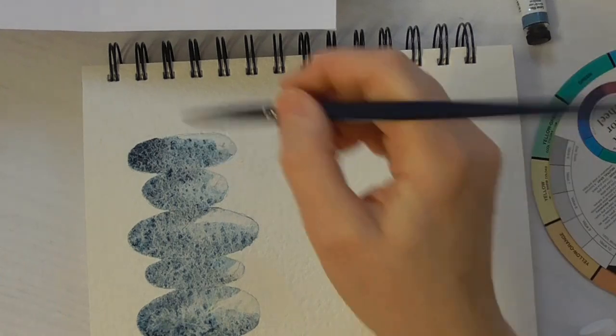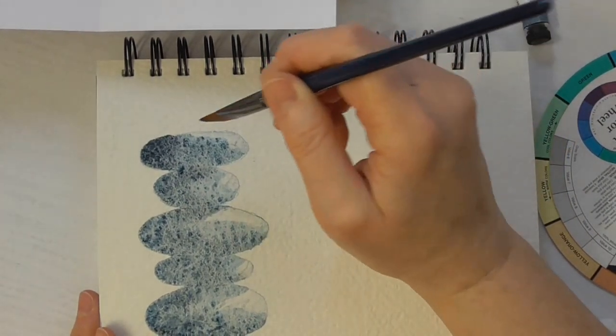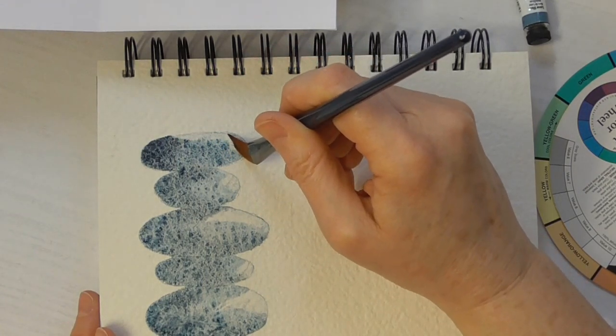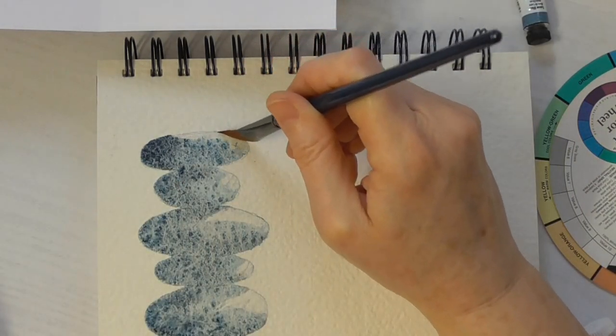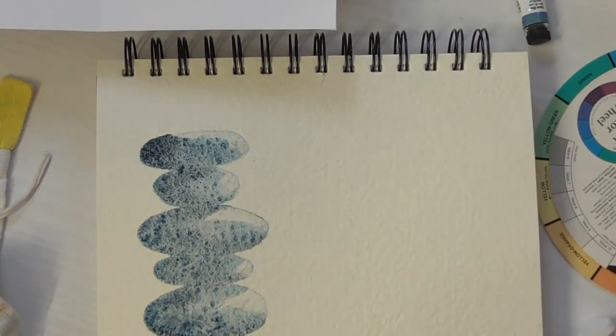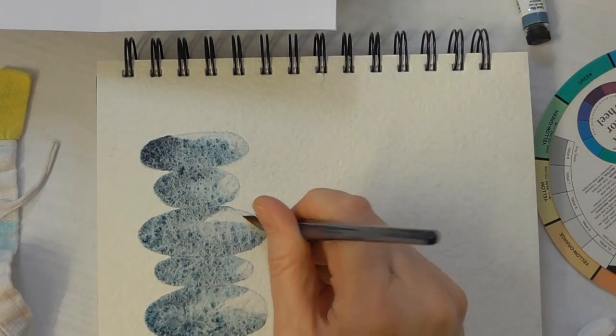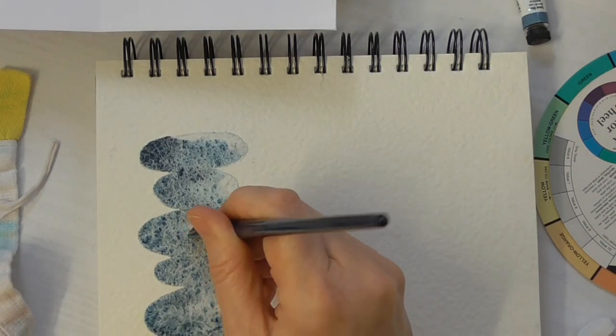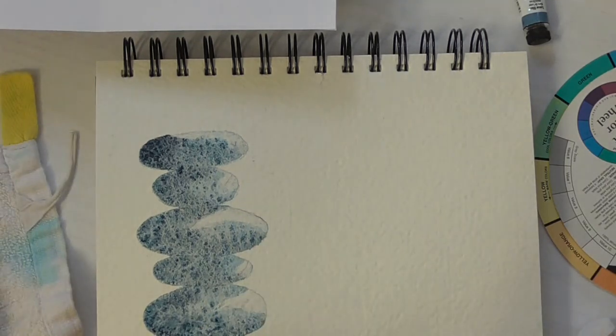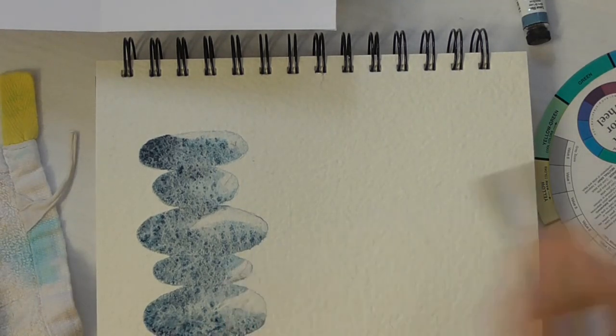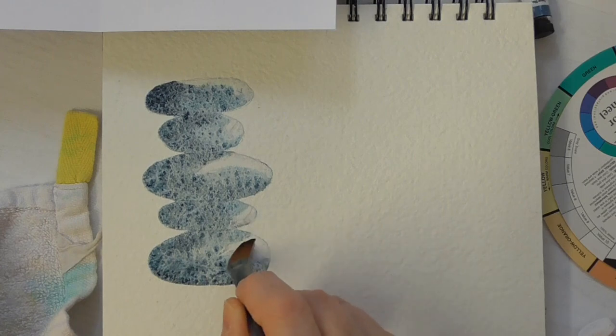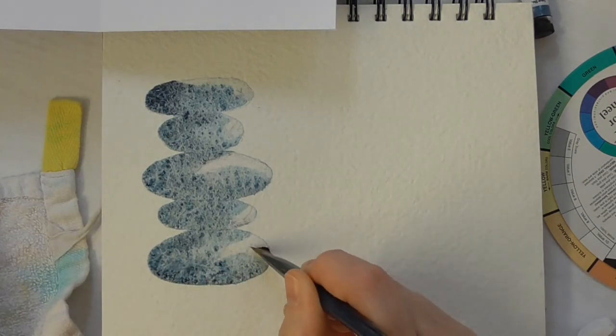Before I finish this section, I just want to go back to those highlights again. Start at the top, dragging, pulling that paint out. Rinse and wipe, dragging, pulling that paint out. I'm doing it one more time because a little bit of seepage might have happened.